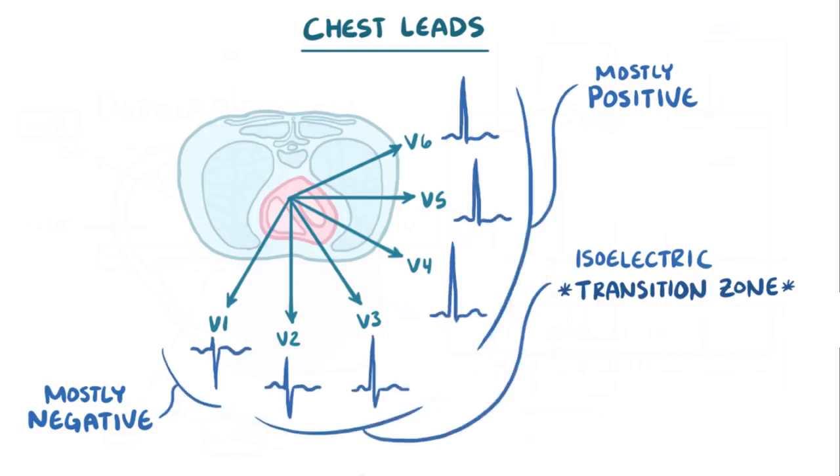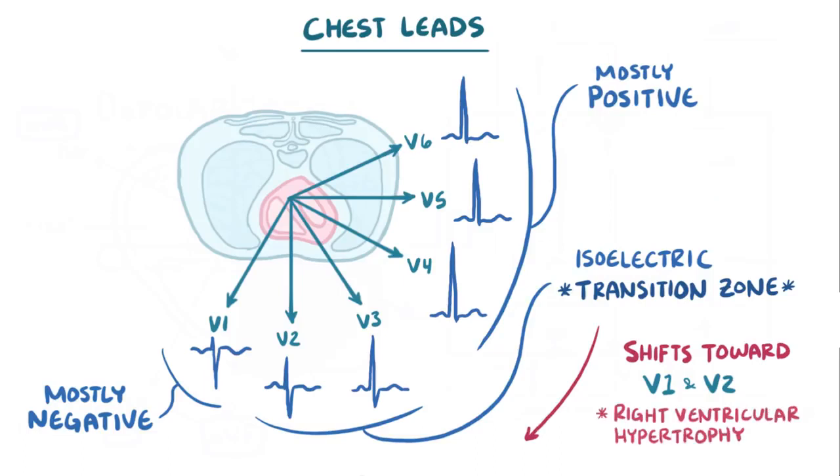If that transition zone shifts toward V1 or V2, then it suggests that the heart might be rotated to the person's right, which can happen if the right ventricle is hypertrophied.